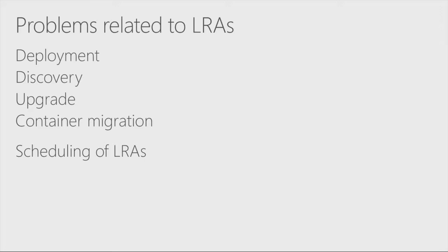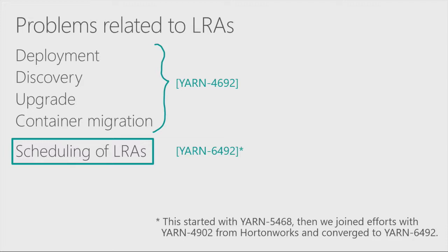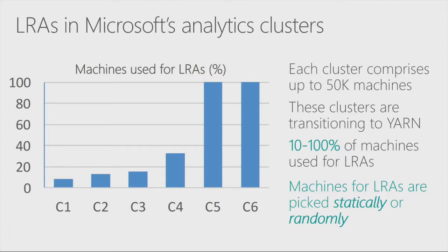There are now a lot of problems related to long-running applications. The most important ones include deployment, discovery of LRAs, upgrade, and container migration. These problems are the focus of a Jira driven mostly from Hortonworks for adding native support for services in Yarn. What we are focusing on today is the scheduling of LRAs, tracked in Jira 6492. We started last summer with another Jira, then joined efforts with 4902 from Hortonworks. This is a cross-company collaboration.